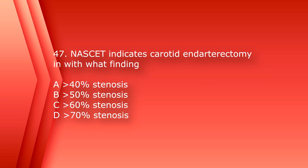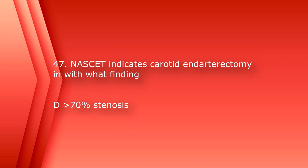Number 47: NASCET, or the North American Symptomatic Carotid Endarterectomy Trial — what a mouthful — indicates carotid endarterectomy in what finding? A. Greater than 40% stenosis, B. Greater than 50% stenosis, C. Greater than 60% stenosis, or D. Greater than 70% stenosis. The answer is D, greater than 70% stenosis.